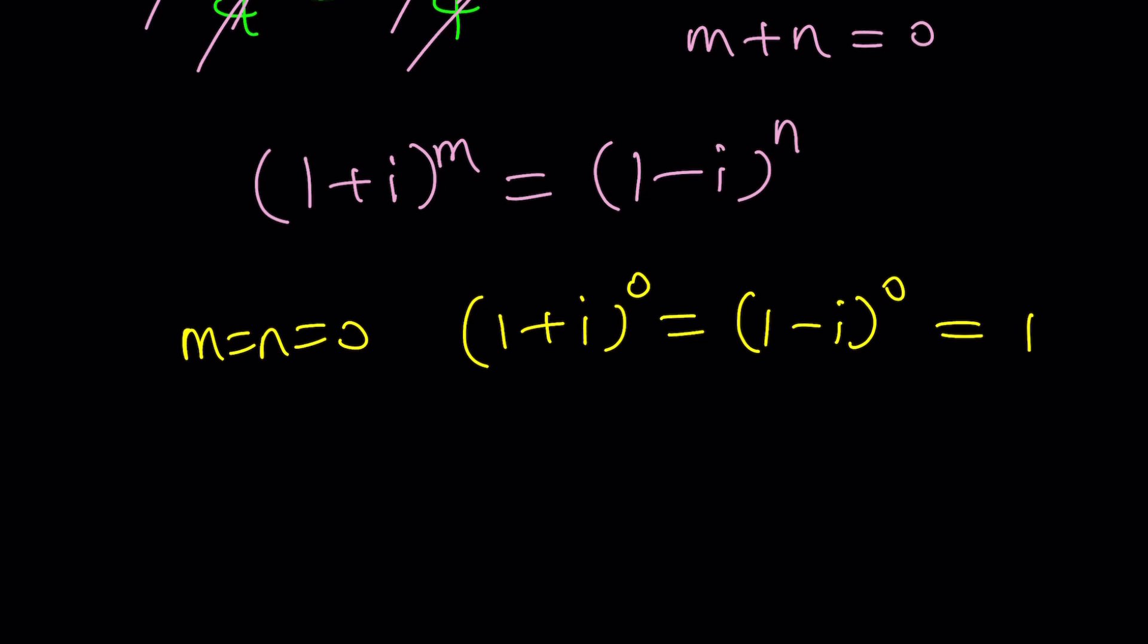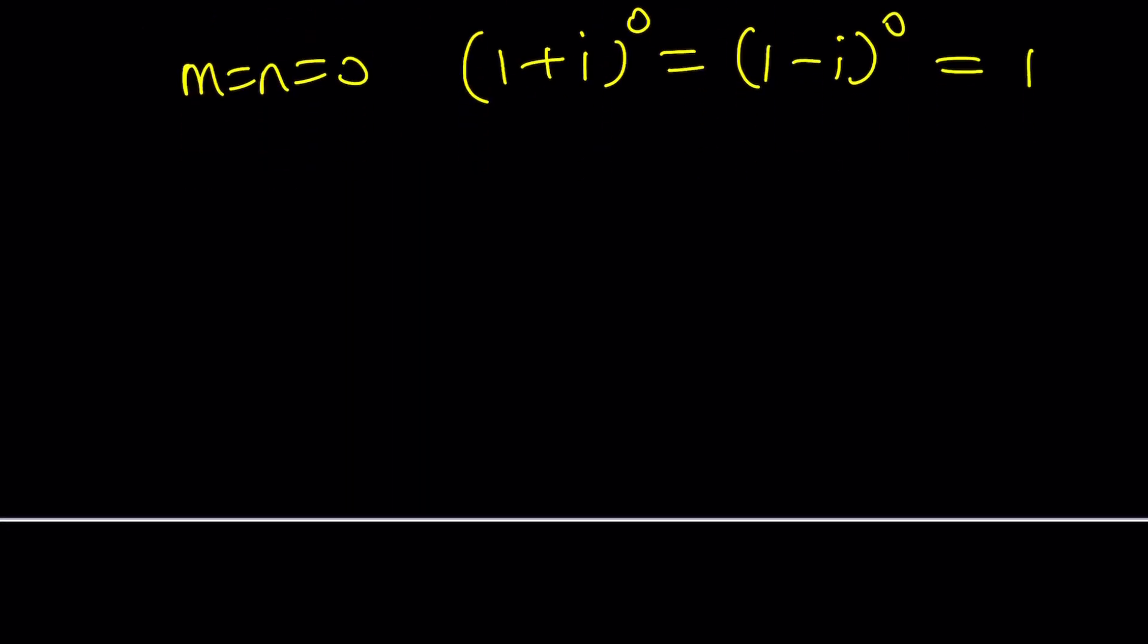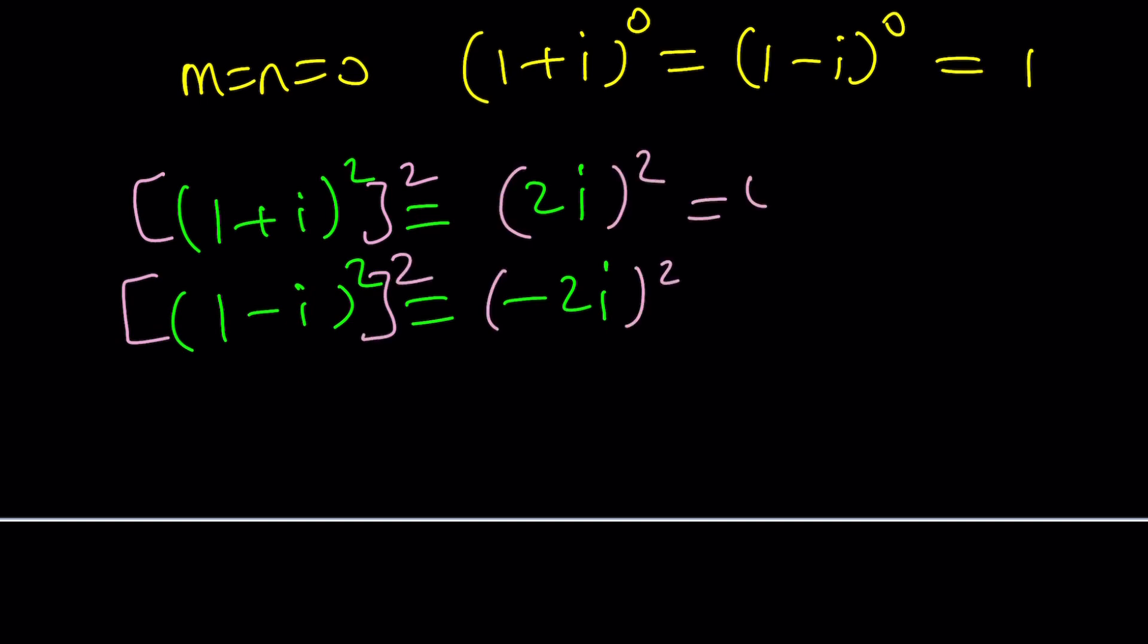How do we solve this problem? So I want you to observe the following to kind of help you visualize or at least understand what is going on. Remember I talked about 1 plus i squared, right? That is 2i. What about 1 minus i squared? That's negative 2i. Easy. Now, these are not equal, but they're opposite. What happens if you square them one more time? They're going to become equal. You see that?